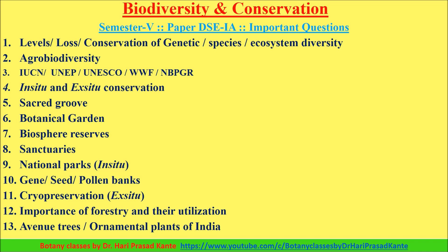Next, short answer questions. These include levels, laws, and conservation of genetic diversity, species diversity, and ecosystem diversity — questions already covered. Also agrobiodiversity: its definition, loss of biodiversity, and Indian agrobiodiversity.